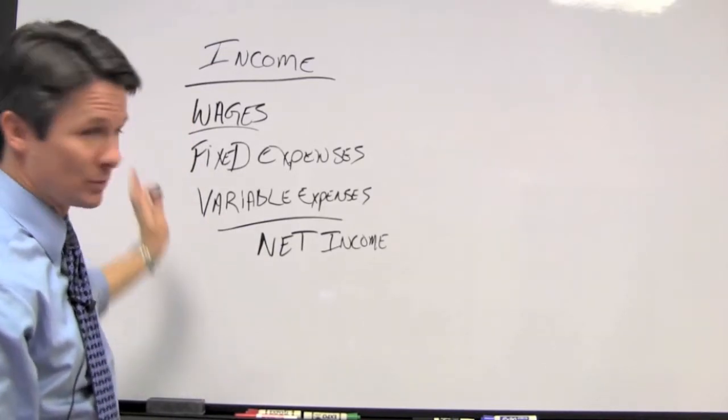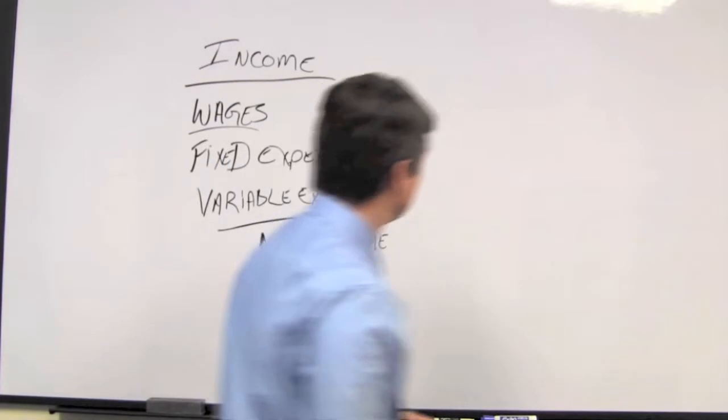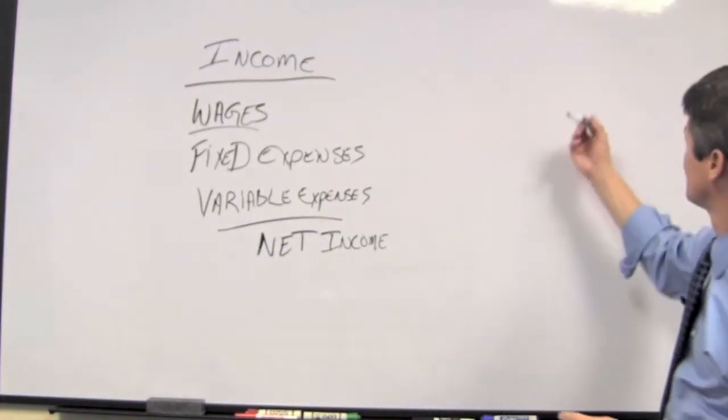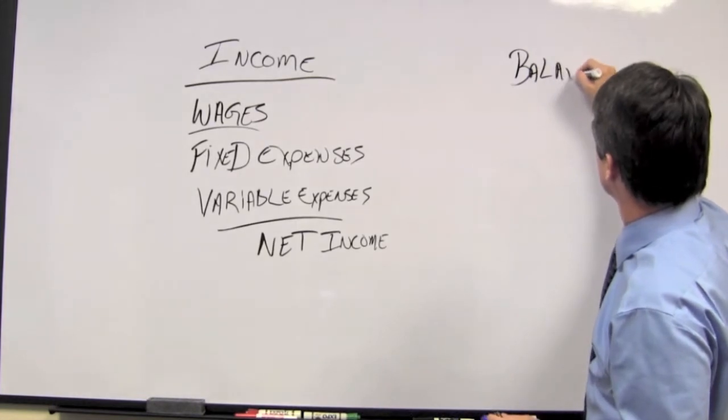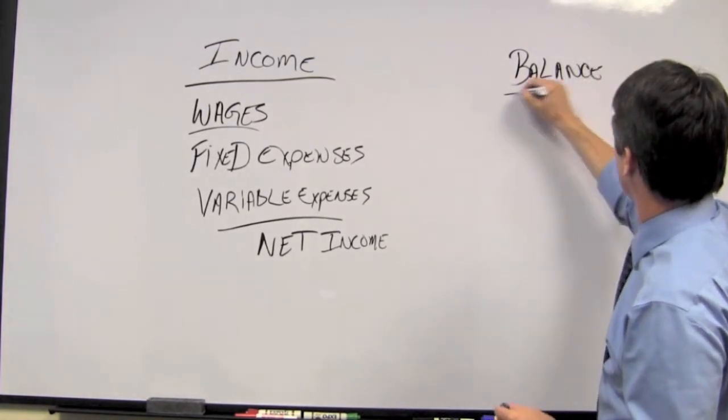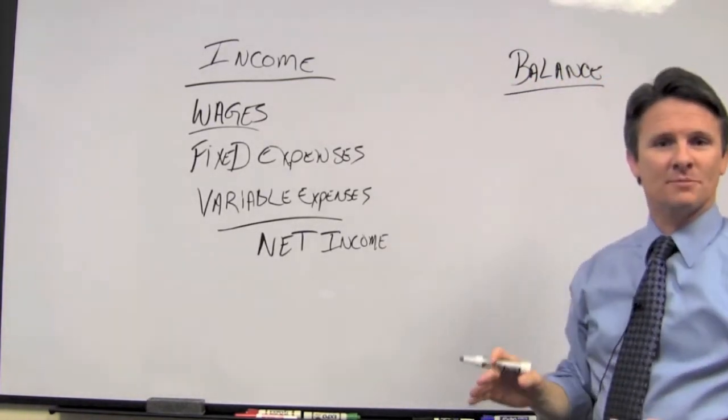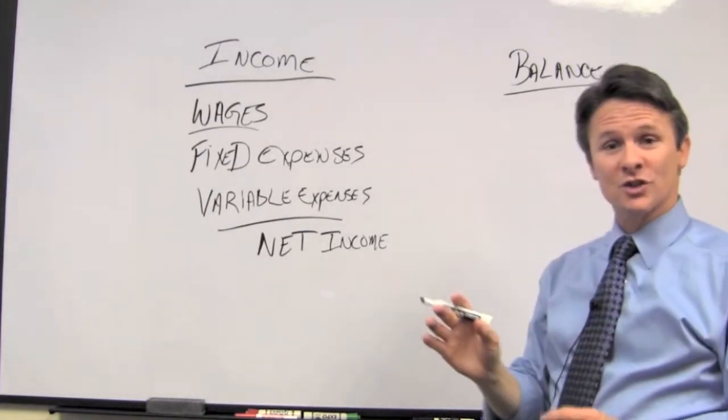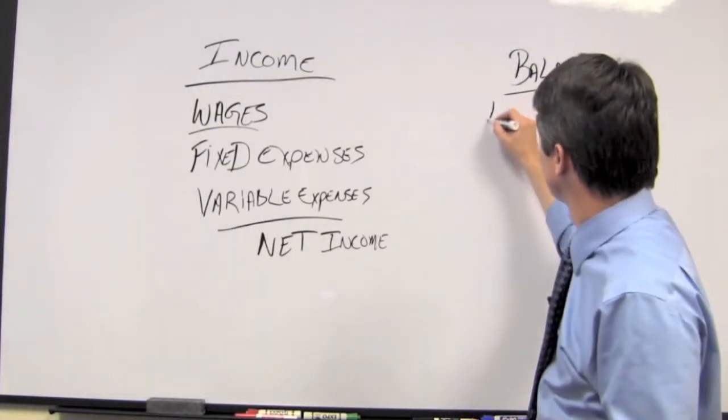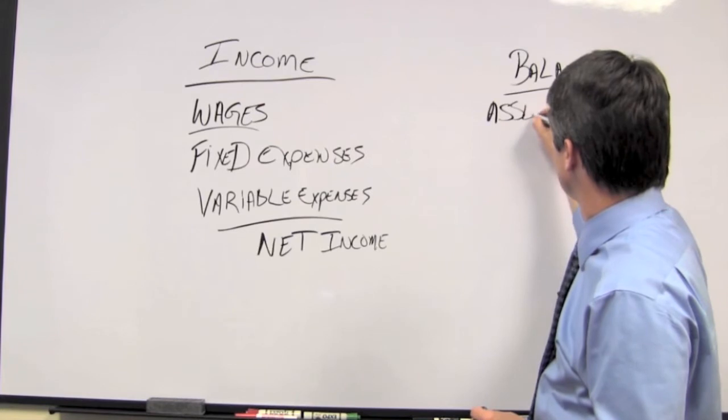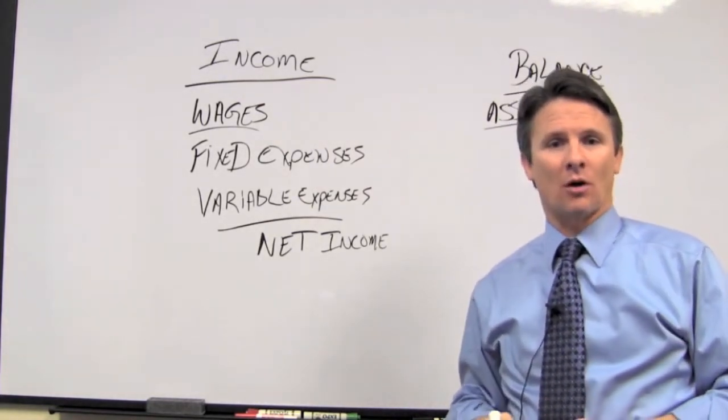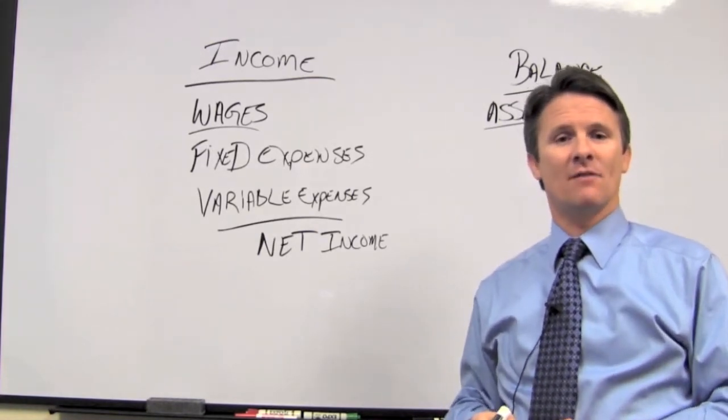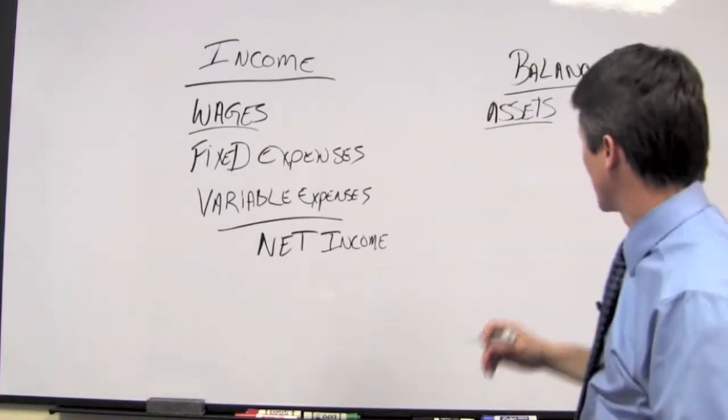Then what we do is we move on over to the balance sheet. Now, the balance sheet is made up of a couple of things. First, it's made up of assets. Assets are things like your house, your car, any investments you may have, a 401k, or perhaps an IRA.